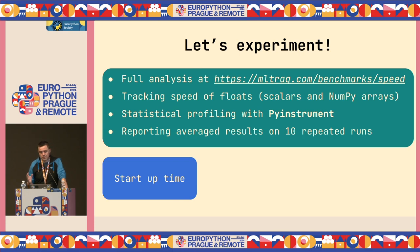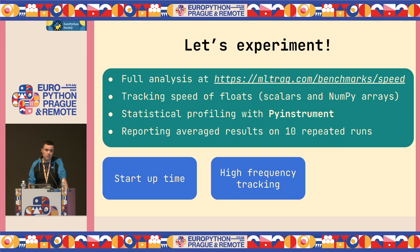We will look at three categories of what could be slow. First: how much time does it take to start tracking — to just kick off? Second: once we start tracking, how frequently can we track our metadata, performance evaluations, and metrics? We want to be able to track as frequently as we want.